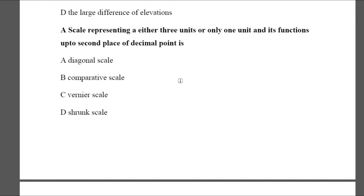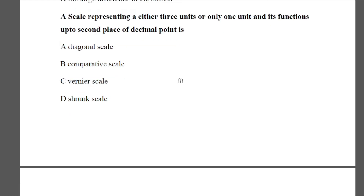Question 4: A scale representing either three units or only one unit and functioning up to the second place of decimal point is — Option A: diagonal scale, Option B: comparative scale, Option C: vernier scale, Option D: shrunk scale. The answer is A — diagonal scale.